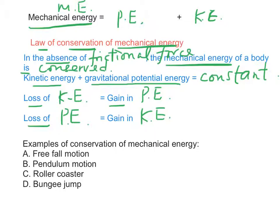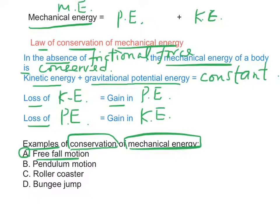Let's see some examples of conservation of mechanical energy: A is the free fall motion, B is the pendulum motion, C is the roller coaster motion, and D is the bungee jump.